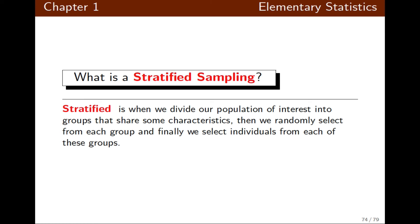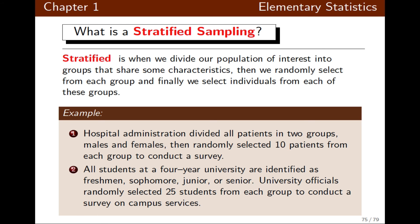Stratified sampling is when we divide the population into groups that share the same characteristic and then randomly select from each group. For example, a hospital divides patients into males and females, then randomly selects ten patients from each group for a survey. Similarly, students classified as freshmen, sophomores, juniors, and seniors — a university selects 25 students from each group to conduct a survey. That is stratified sampling.